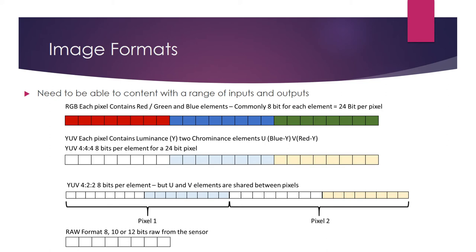Another format is luminance and chrominance — YUV. YUV 4:4:4 similarly contains 8 bits per channel for a 24-bit pixel. The Y element contains the luminance, so looking at just Y gives a black-and-white image, while the two chrominance elements carry blue-minus-luminance and red-minus-luminance. In the popular YUV 4:2:2 format, each pixel gets a new luminance value but two adjacent pixels share the U and V elements, requiring only 16 bits per pixel.